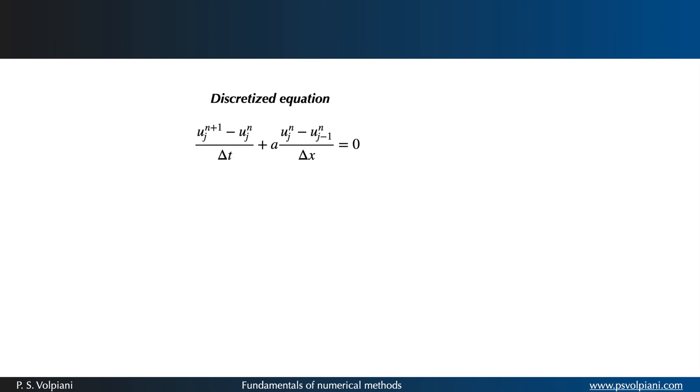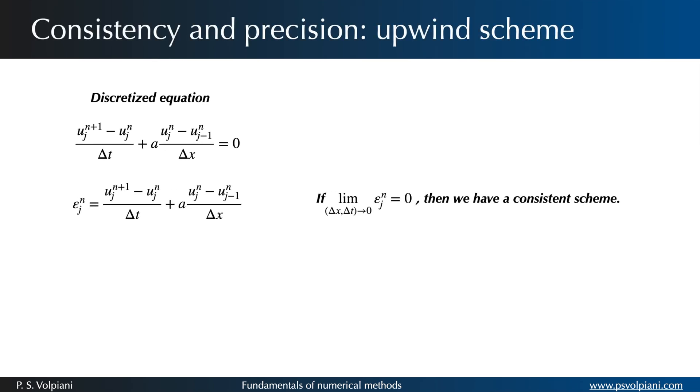Let's talk about consistency and precision now. A numerical scheme is consistent if the discrete solution converges towards the continuous solution when delta t and delta x tend to 0. In other words the truncation error must become 0 when the mesh spacing tends to 0.